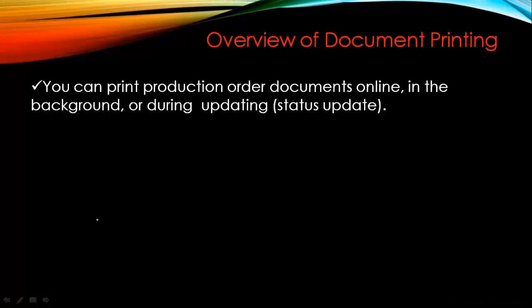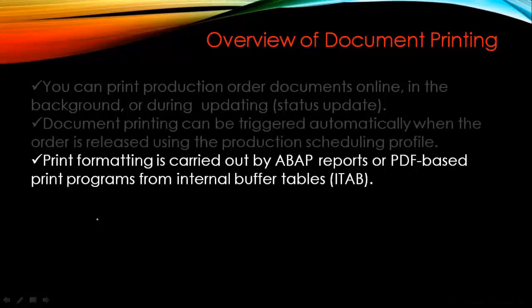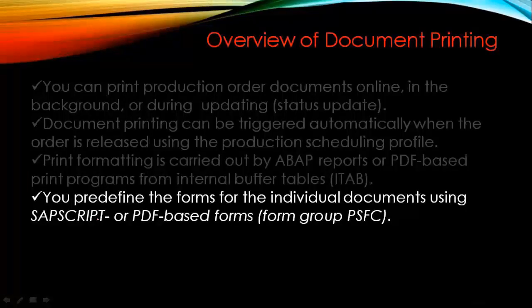You can print production order documents online, in the background, or during a status update. Document printing can be triggered automatically when the order is released using the production scheduling profile — in a previous video I showed how to customize this to print during release or during saving. Print formatting is carried out by ABAP reports or PDF-based print programs from internal buffer tables. You predefine the forms of individual documents using SAP Script or PDF-based forms.